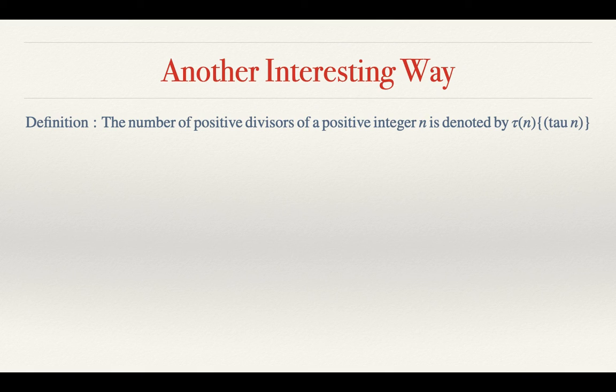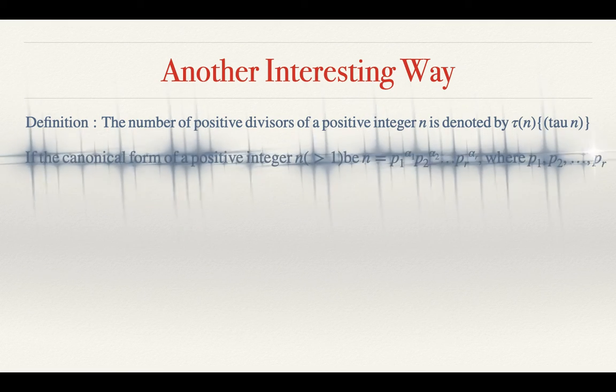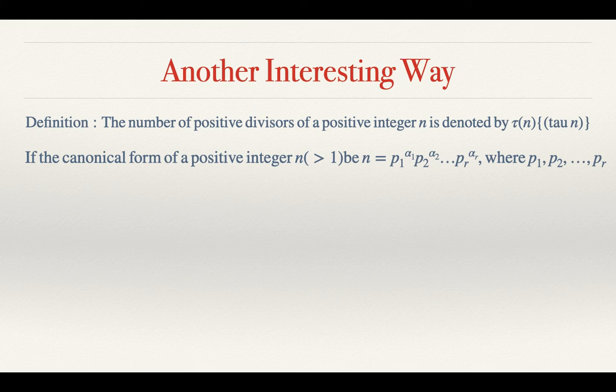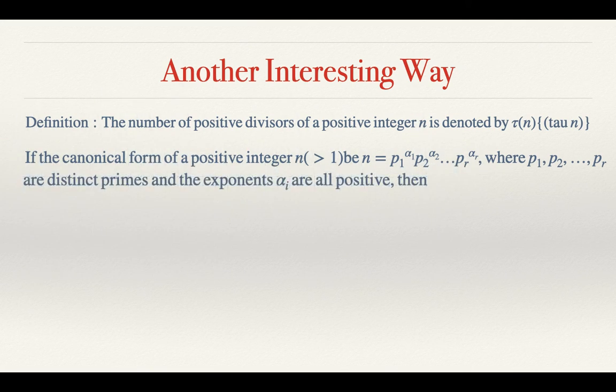The number of positive divisors of a positive integer n is denoted by tau(n). If the canonical form of a positive integer n be n equals p1 to the power alpha 1, p2 to the power alpha 2, up to pr to the power alpha r, where p1 to pr are distinct primes and the exponents alpha i are all positive, then tau of n equals (alpha 1 plus 1) multiplied by (alpha 2 plus 1)...